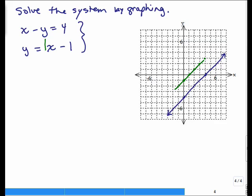And then, hmm, what's going on here? Both of these lines have a slope of 1. So this line, y equals x minus 1, and the other line, x minus y equals 4, are parallel lines. They're never going to meet.